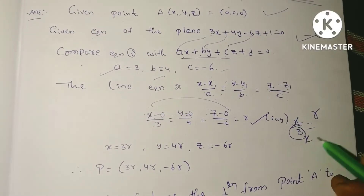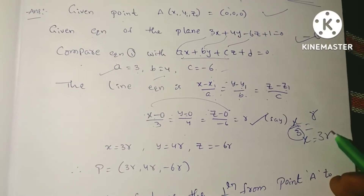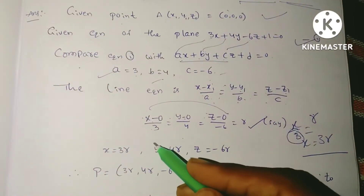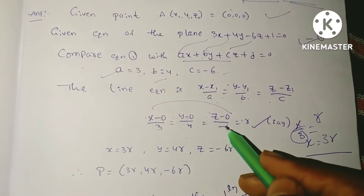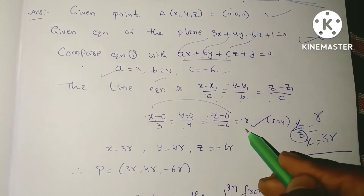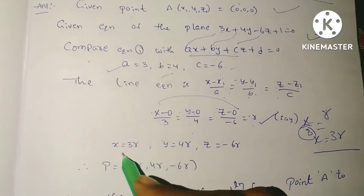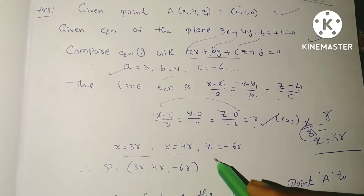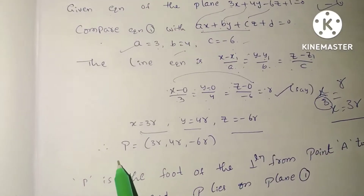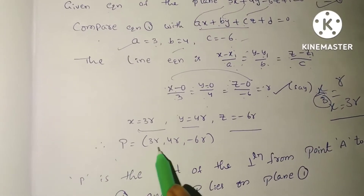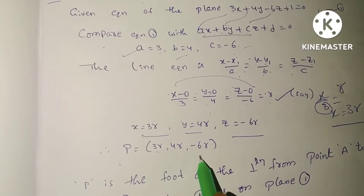Substituting the values, we get: X = 3R, Y = 4R, and Z = -6R. So the parametric point P on the line is equal to (3R, 4R, -6R).